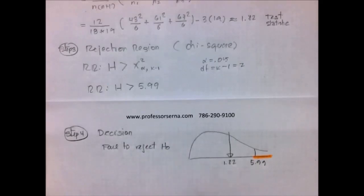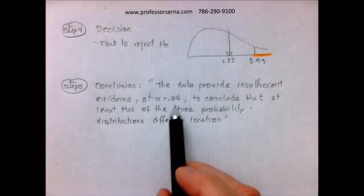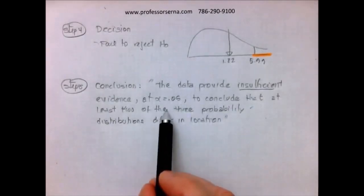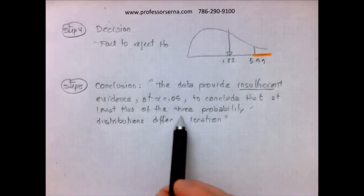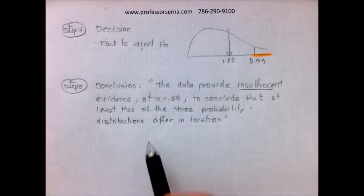And our next step is a conclusion, which is: the data provide insufficient evidence at alpha equals 0.05 to conclude that at least two of the three probability distributions differ in location. And that's it. That's the Kruskal-Wallis test.